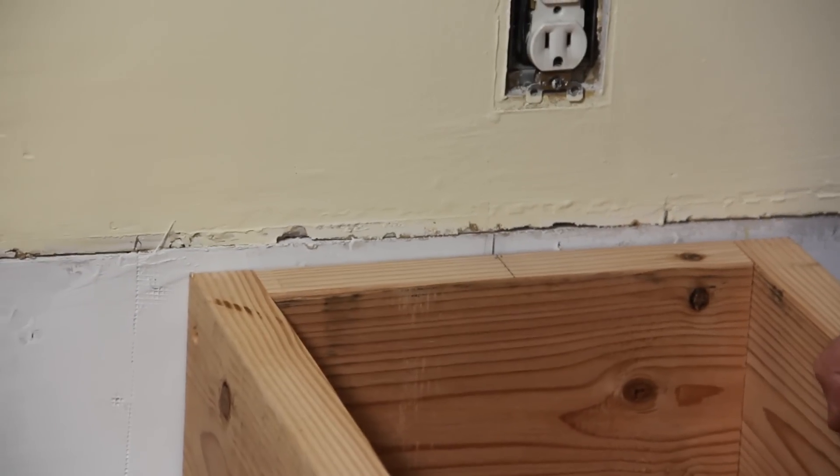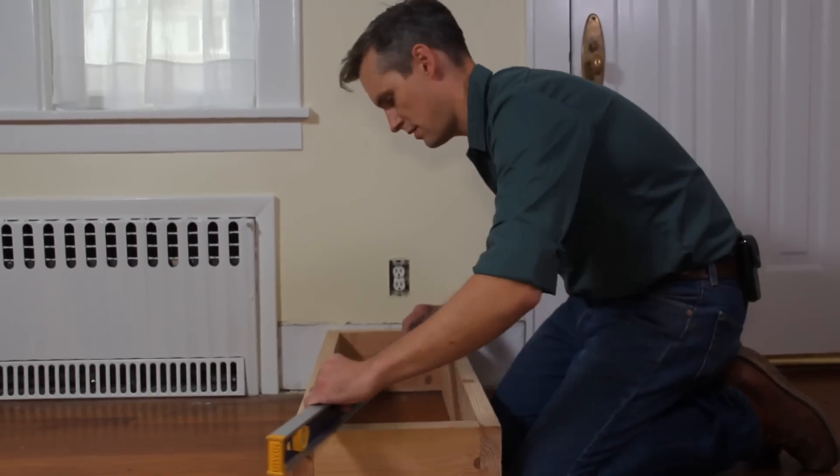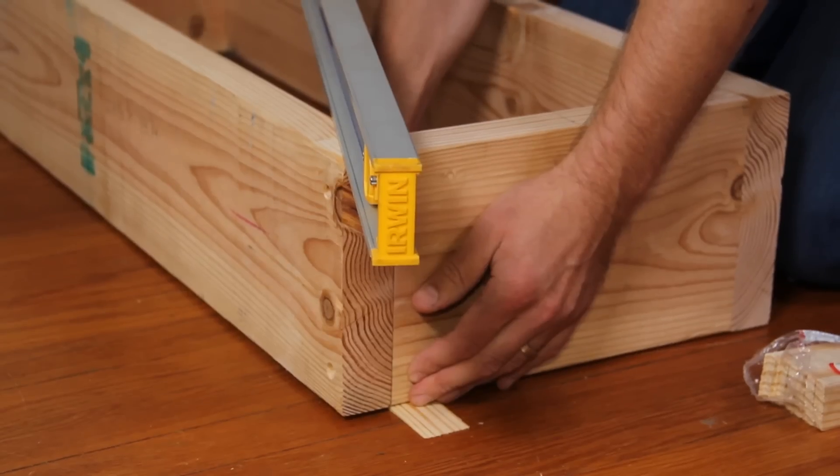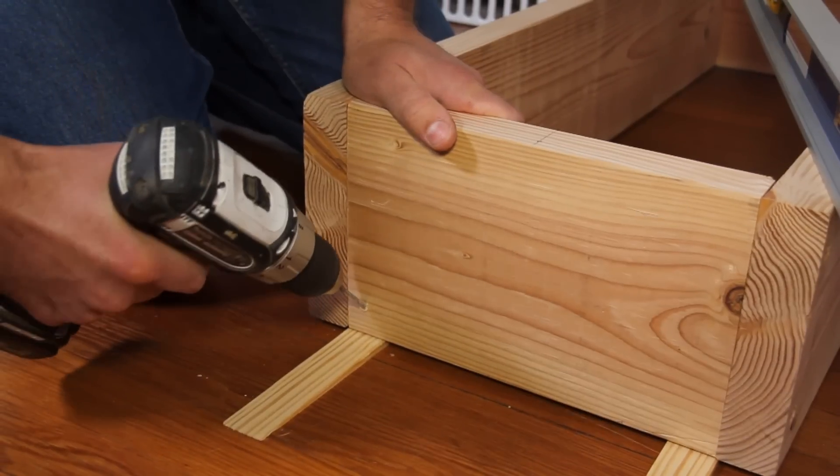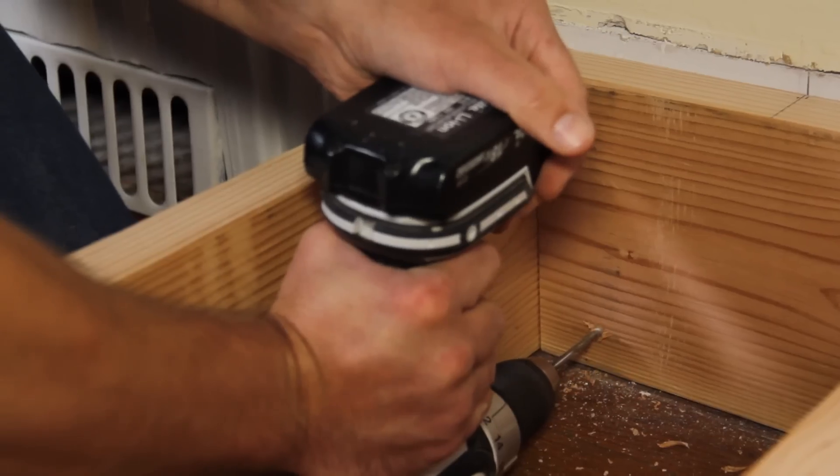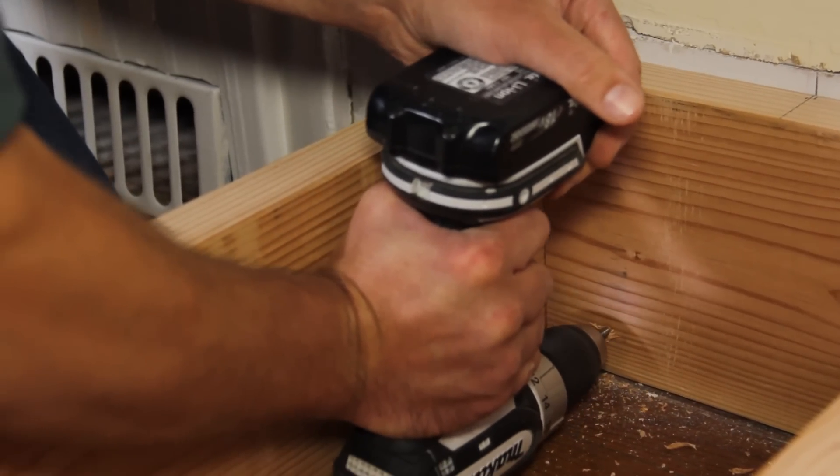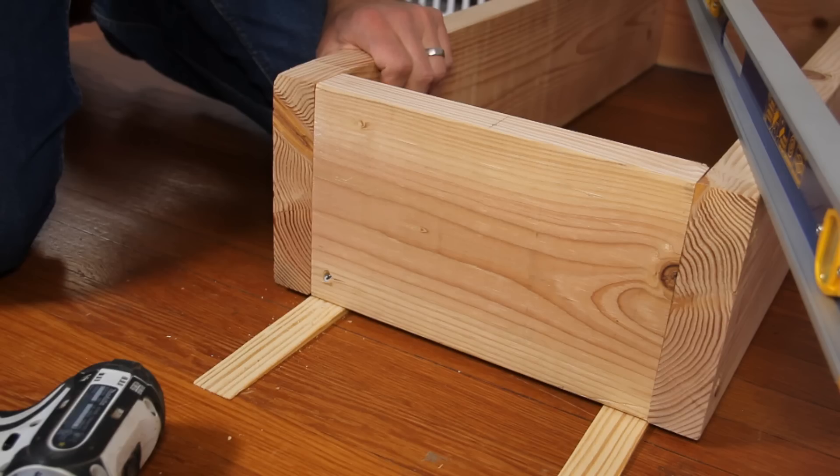Now you can go ahead and position the base. Check it for level along both diagonals and shim it up if you need to. Toenail two deck screws to secure the end and anchor the other end to the wall into a stud if at all possible. Then score the shims and just snap them off.